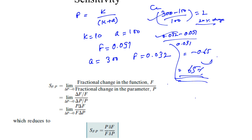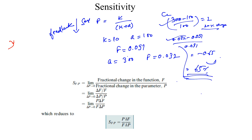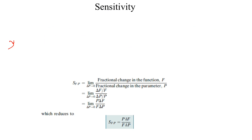As we proceed, we see that another advantage of the feedback system is that it reduces sensitivity to parameter changes. That is an important part of the feedback system — sensitivity is reduced. The definition of sensitivity is the ratio of fractional change in the function to the fractional change in the parameter.